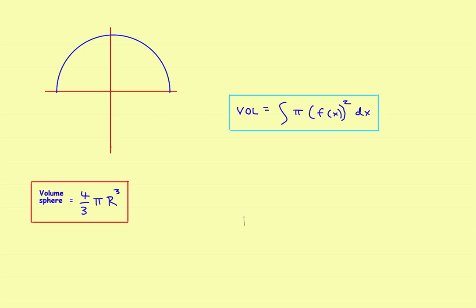In this video we'll take a look at a couple more uses of volumes of revolution, and in particular the disk method. What we're going to look at is this: you may remember from your geometry days the volume of a sphere is four-thirds pi r cubed. Most people were just given that formula, but we're going to derive it — show where it comes from — using volumes of revolution.